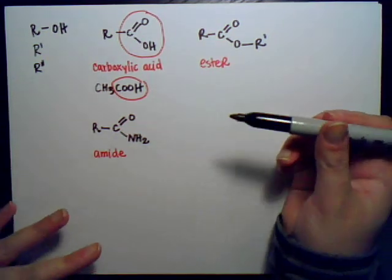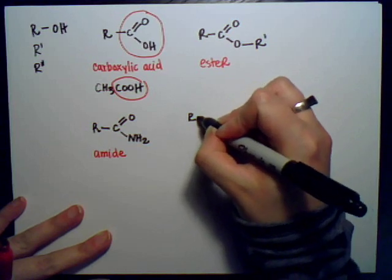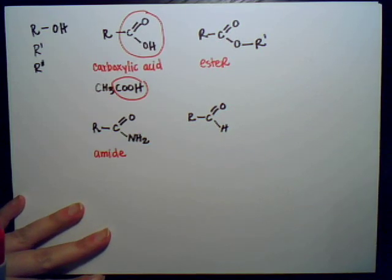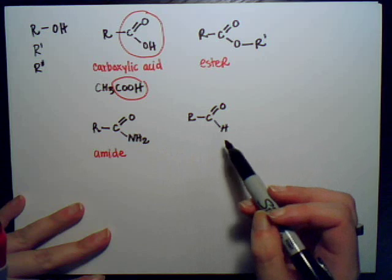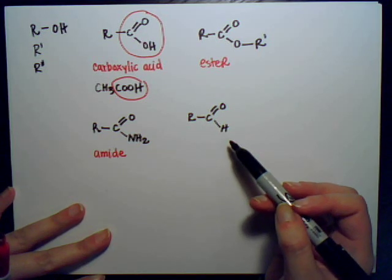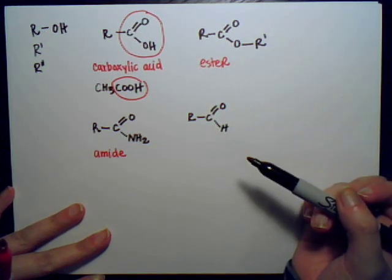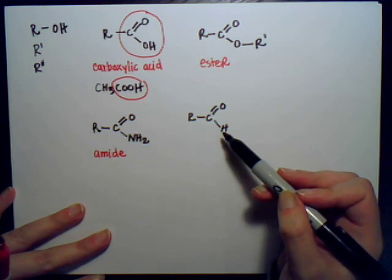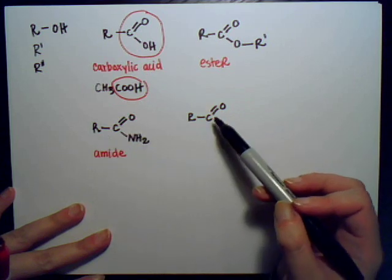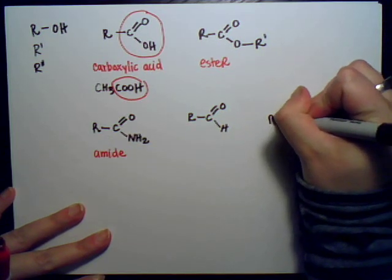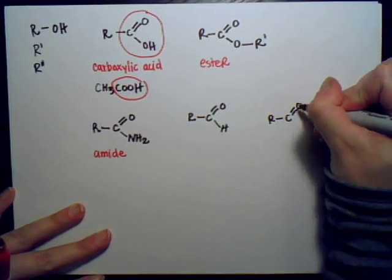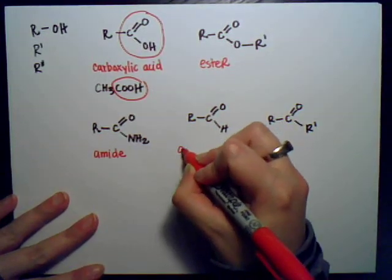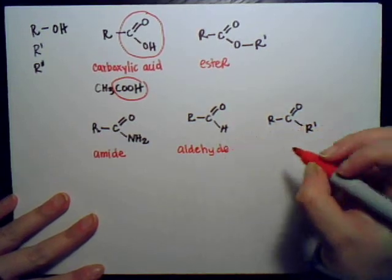Aldehyde has this functional group: these are all kind of similar in that they have an R group and a double bonded O. But take care to note that aldehyde has a hydrogen here instead of an OH or something. The one that's really similar is a ketone — instead of having a hydrogen there, it has a different R group. So this is an aldehyde, and this is a ketone.